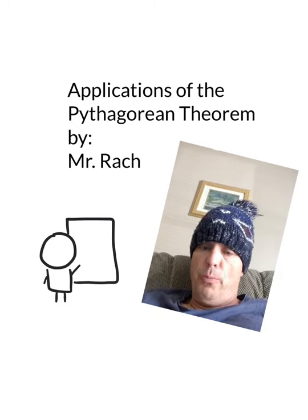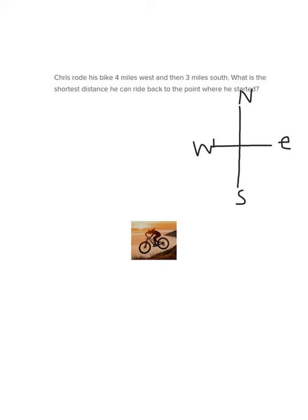Here we go. Okay, here's our first example. This example is about Chris. Chris rode his bike four miles west and then three miles south. What is the shortest distance he can ride back to the point where he started? Well, in order to do this problem we have to know our directions. Up is north, down is south, to the right is east, and to the left is west.